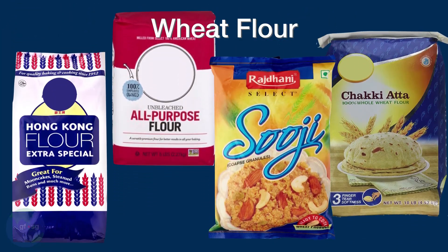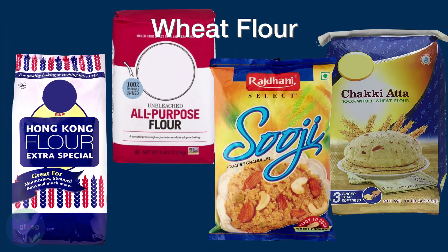The primary source of gluten is wheat flour. There are lots of names for wheat flour, including all-purpose flour, top flour, self-raising flour, atta, cake flour, rava, suji, and bread flour, just to name a few. If an ingredient list just states flour, it can be assumed to be wheat flour.